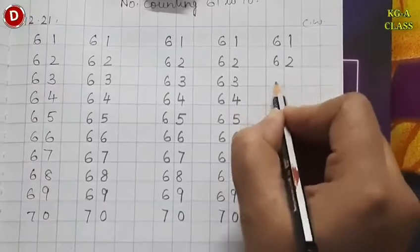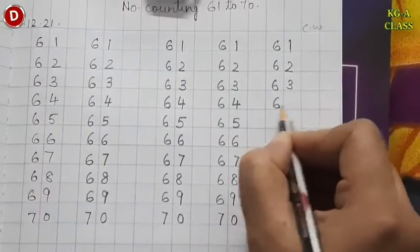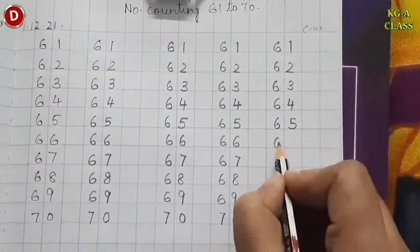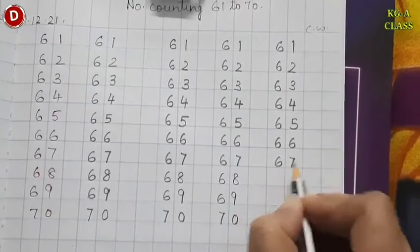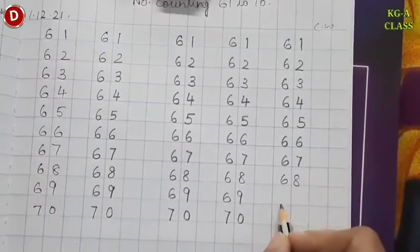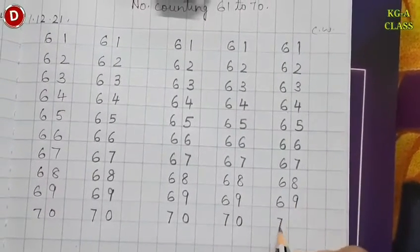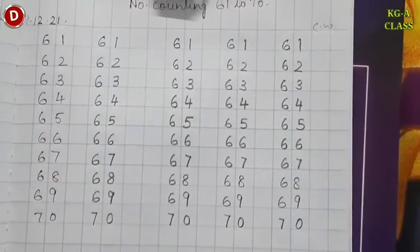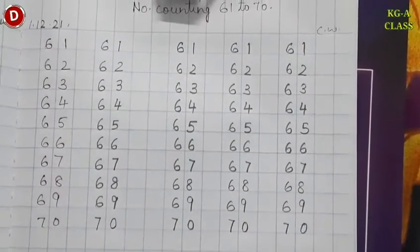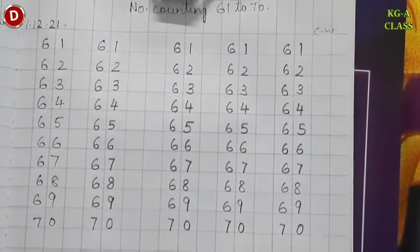61, 62, 63, 64, 65, 66, 67, 68, 69 and here comes 70. In this way, children, you can write 4 or 5 times in one page, 61 to 70, the way I taught you.